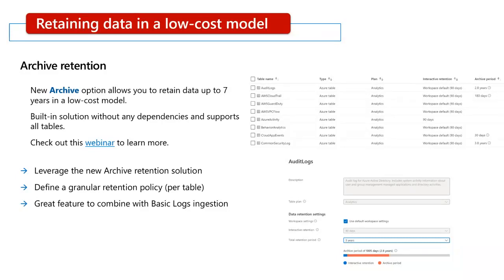Retention is probably the next major cost besides ingestion, if you have the need to retain logs for long term. Previously we only had workspace retention which gives you up to 2 years of retention. Now we have a new retention solution called archive, which allows you to retain data up to 7 years at a cheaper price. Archive retention is also a built-in solution without any dependencies and it supports all tables. To optimize retention costs, it is recommended to leverage the new archive retention solution. You should also define granular retention at a per-table level, as you might not need all tables to be retained for long term. The archive solution is a great feature to combine with basic logs ingestion to reduce your costs.